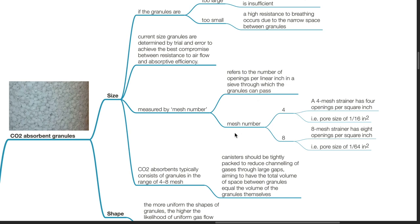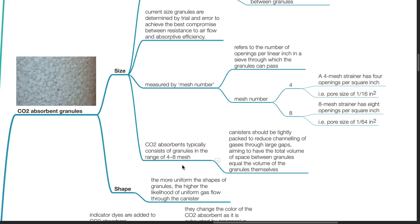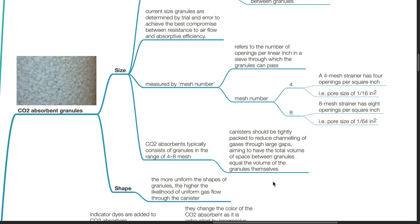For example, for a mesh number of 4, a 4-mesh strainer has 4 openings per square inch; for a mesh number of 8, an 8-mesh strainer has 8 openings per square inch. CO2 absorbent typically consists of granules in the range of 4 to 8 mesh. Canisters should be tightly packed to reduce channeling of gases through large gaps, aiming to have the total volume of space between granules equal the volume of granules themselves. The more uniform the shapes of granules, the higher the likelihood of uniform gas flow through the canister.